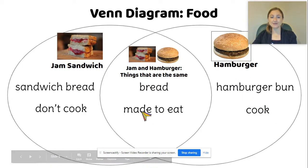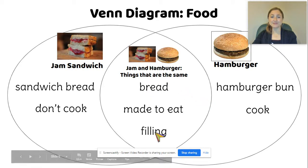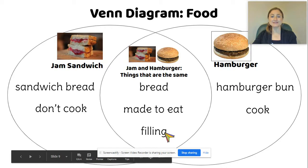And "made to eat" goes in the middle, because it goes with both of them. Both the jam sandwich and the hamburger have a filling — that's something that's the same about them. They have something in the middle.